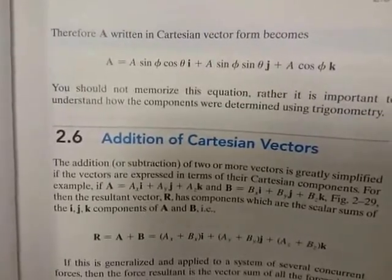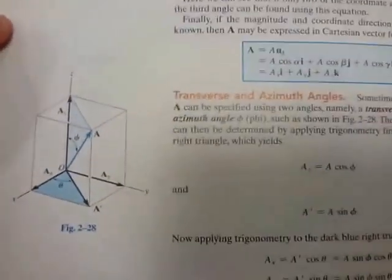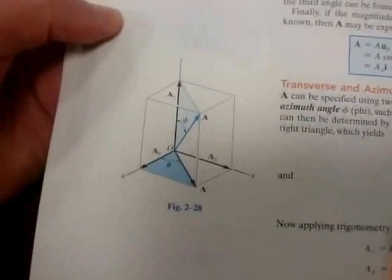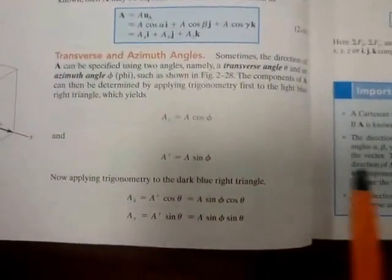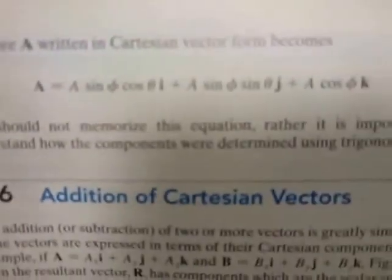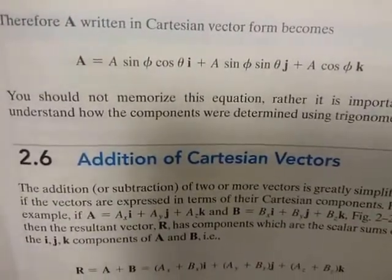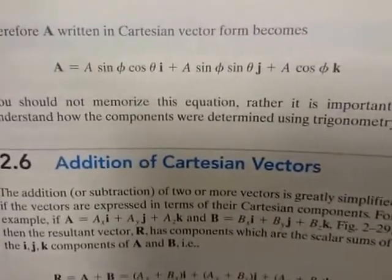In the next video we'll look at an example and put this into practice. To recap: we are trying to convert vectors into Cartesian vector form. Before, we used coordinate direction angles; this time the vector may be represented with transverse and azimuth angles, and we convert it the way we've just described. Please leave comments or feedback.